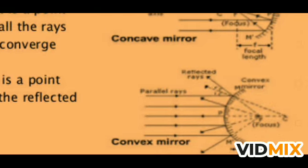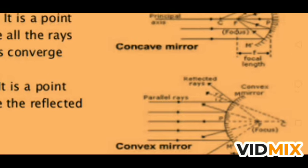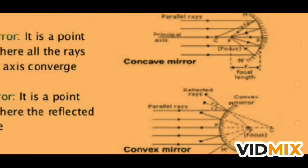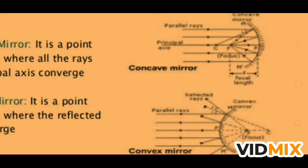This is a very important diagram to distinguish the focus and focal length of convex and concave mirrors. Draw it in your copy and understand it well, because many times questions come in board exams to distinguish concave and convex mirrors on the basis of focus and focal length. In the concave mirror, light rays actually meet at the point — giving a real focus.